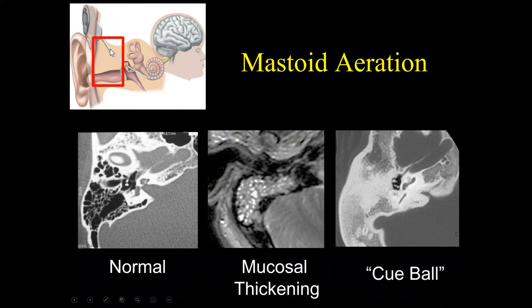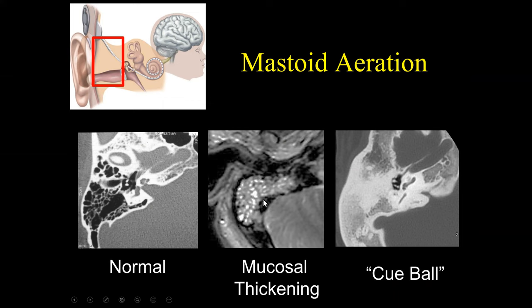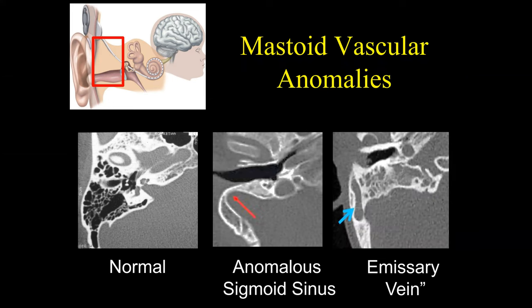Now that we understand that the surgeons start from the outside and work their way inside, with the electrical activity in the cochlea eventually transmitted into the brain, we have a good sense of what needs to be in our imaging reports. The first thing to discuss is mastoid aeration. The surgeons need to know whether the mastoid bone is well developed and aerated, because well-aerated bone is easier to drill. We also need to note any mucosal thickening, and report an unaerated or 'cue ball' mastoid — a completely sclerotic mastoid with no air cells.